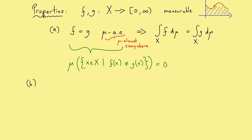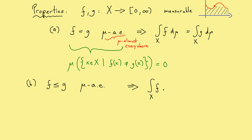Now to the second property, which is the monotonicity. It is descriptively given by saying that if a function is bigger than another one, then also the area should be bigger. However, as before, we need the less-or-equal sign only almost everywhere. And then we can conclude that the integral of f is less or equal than the integral of g.